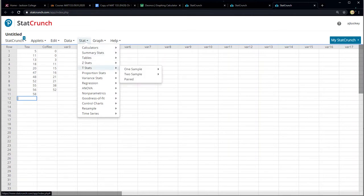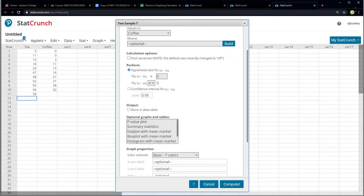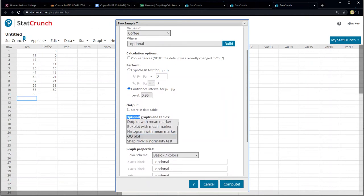So I go to stat, t-stat, two sample, just like I wrote on the previous page. And then you have to choose, do you have data or do you have a summary? With data is what we have because we have two columns of data. Summary is when I give you the x-bars and the s's and stuff like that in the problem. So you're going to click with data. And then it's going to say, where's your sample one? Well, my sample one is tea. My sample two is coffee. I'm not going to check that pooled. We're just going to leave it unpooled. Going to go to confidence interval right there, and 0.95 is perfect. And if I'm interested, I can get all sorts of things like a confidence interval plot, summary statistic. I can even get a QQ plot if I wanted to. There's a bunch of stuff in here that you can do, but you don't have to do any of those. Those are all just optional. Click compute.